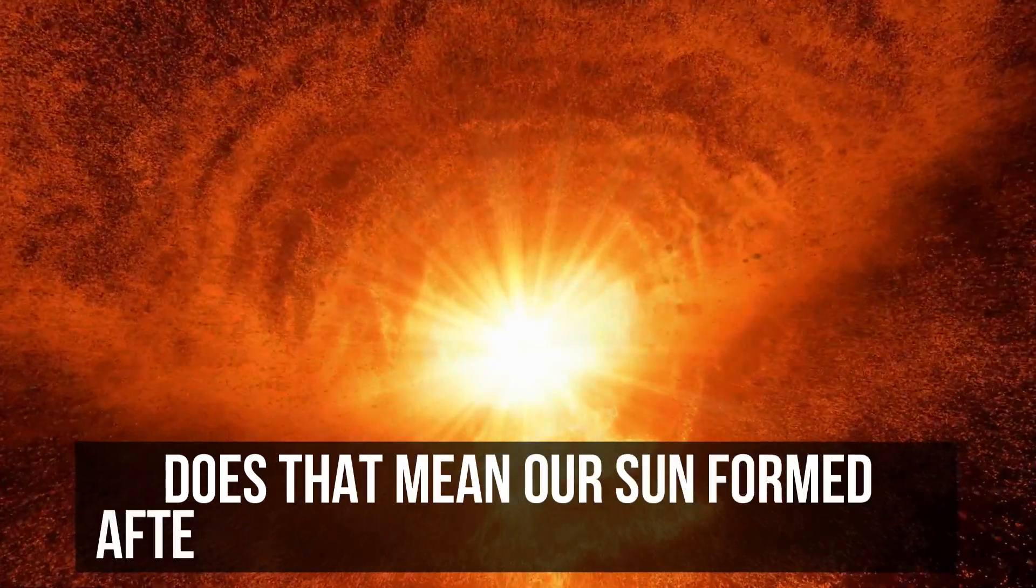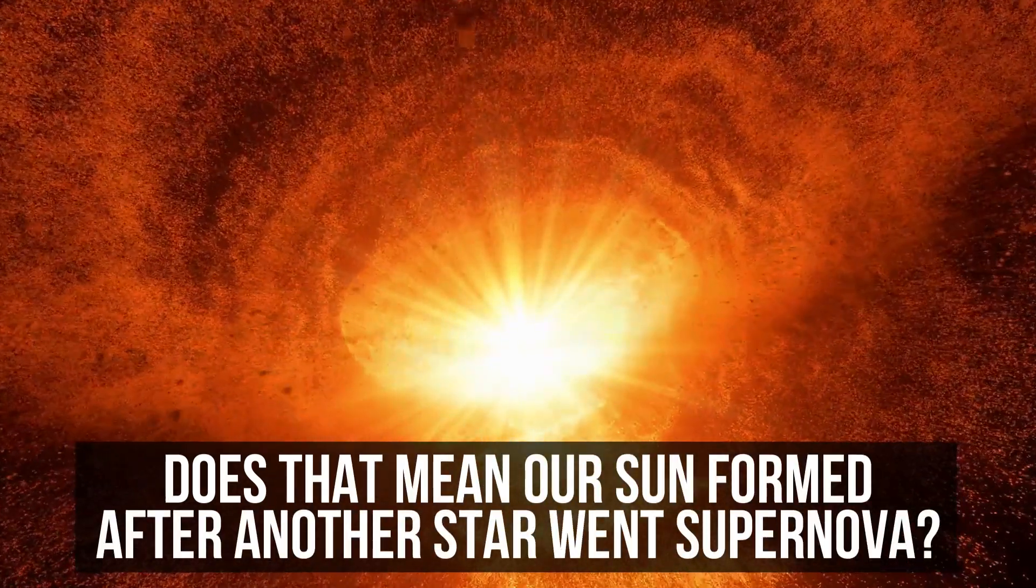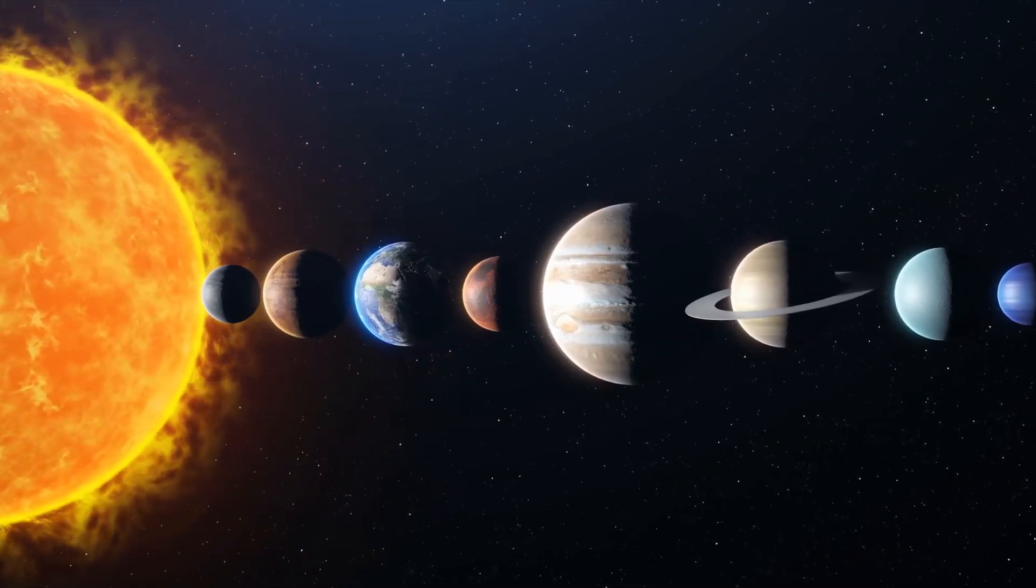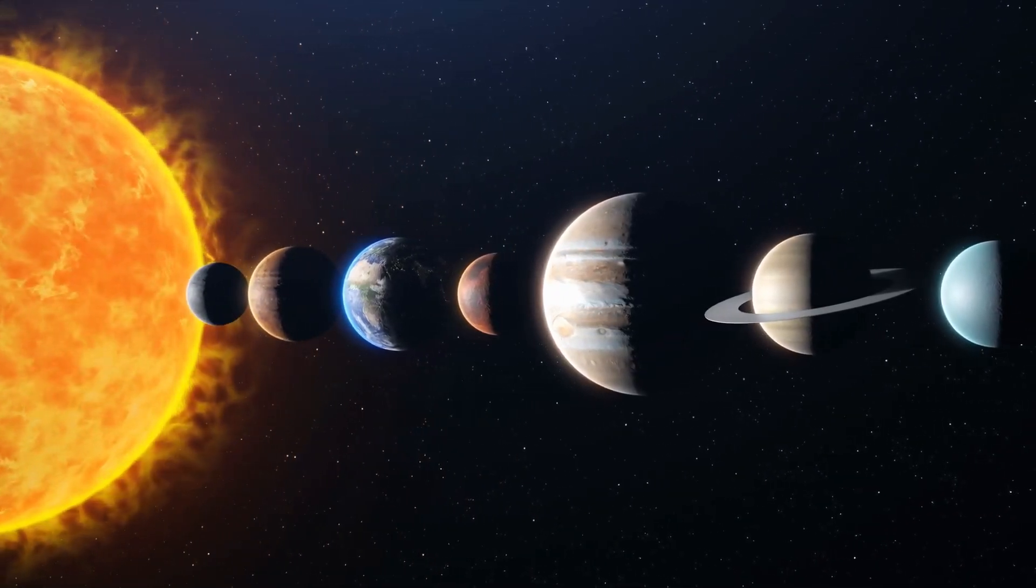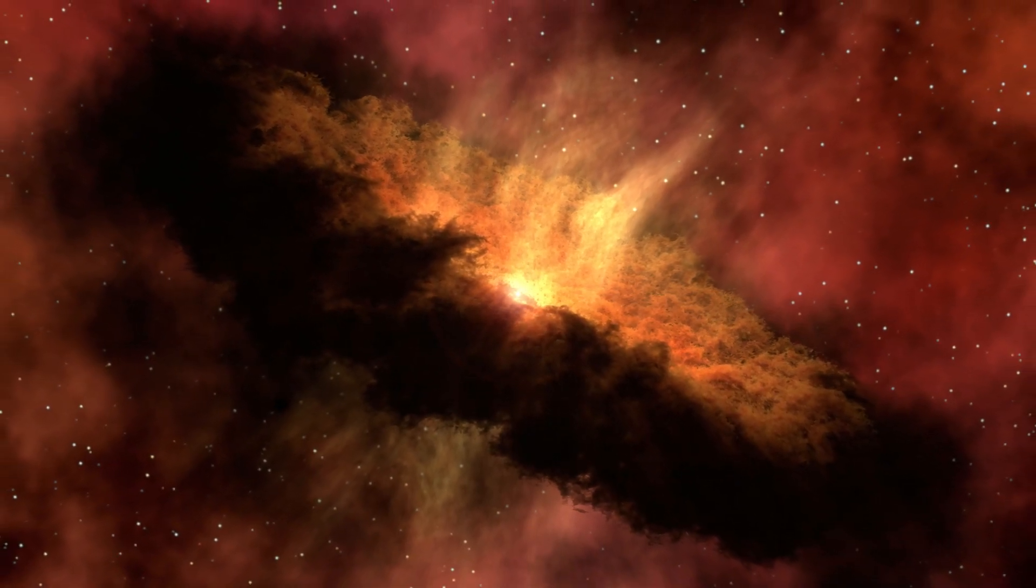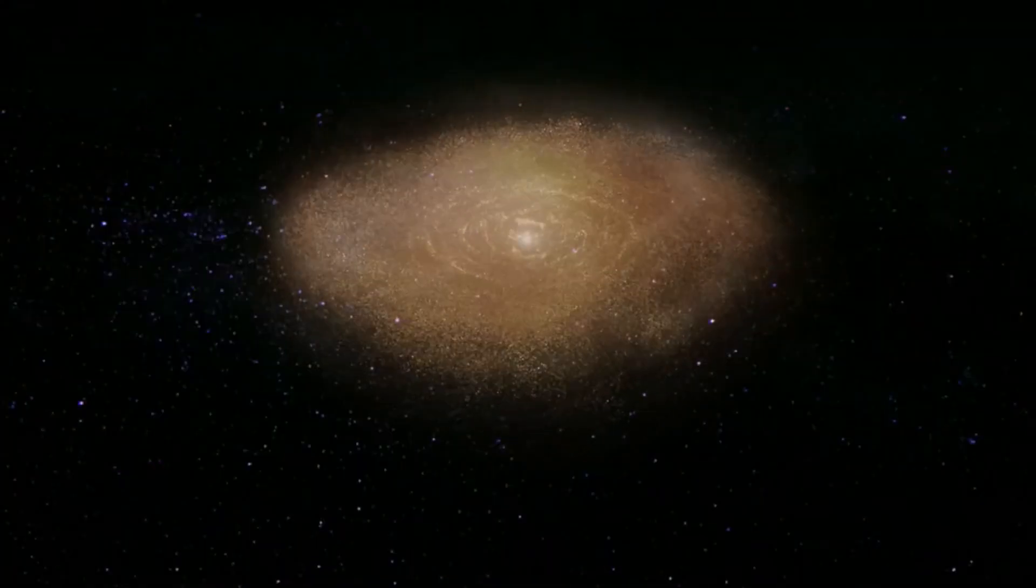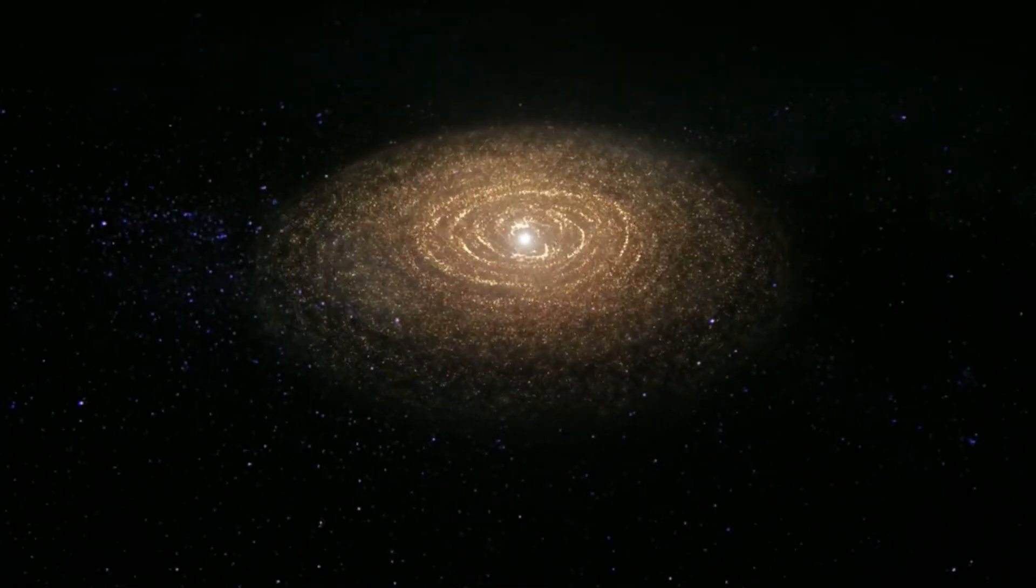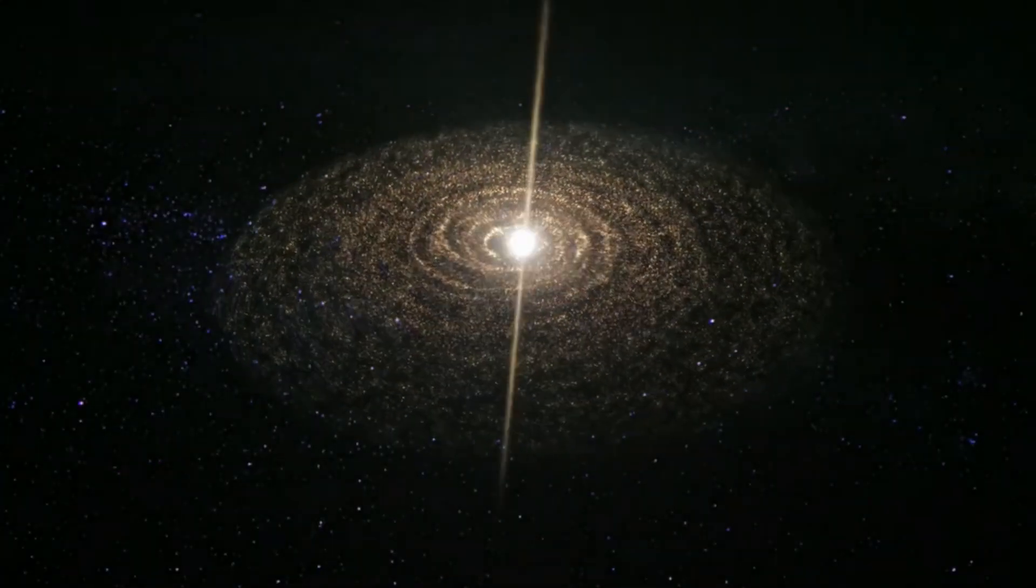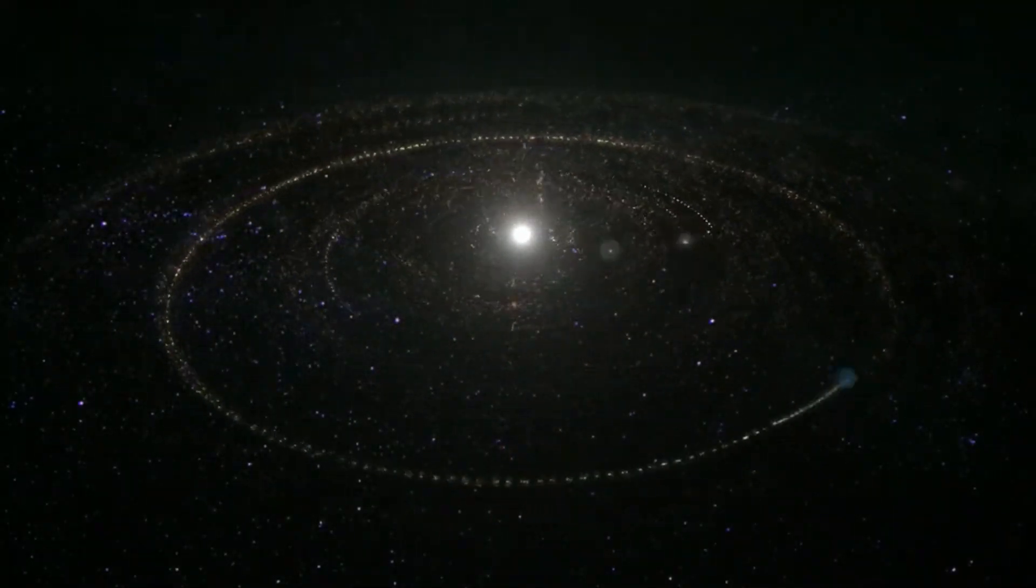Does that mean our Sun formed after another star went supernova? The Sun and the planets formed together 4.6 billion years ago from a cloud of gas and dust called the solar nebula. A shockwave from a nearby supernova explosion probably initiated the collapse of the solar nebula. The Sun then formed in the center while the planets formed in a thin disk orbiting around it.